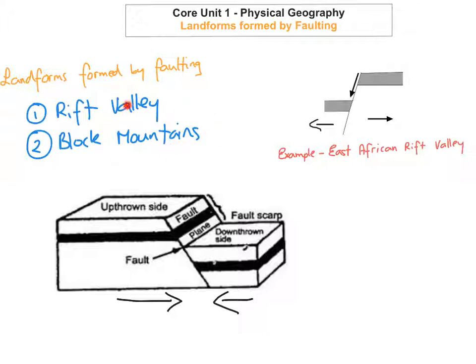The next one we're going to look at is block mountains. Block mountains form from compression between two destructive plate boundaries as they crash into and collide with each other. They form in two ways. The first way is that the crust between the two parallel faults is uplifted and creates an upthrown.